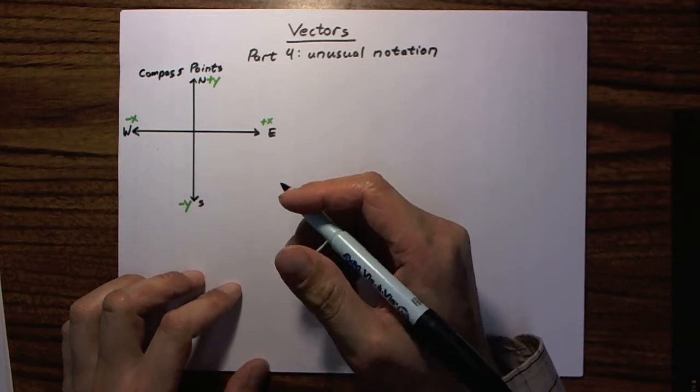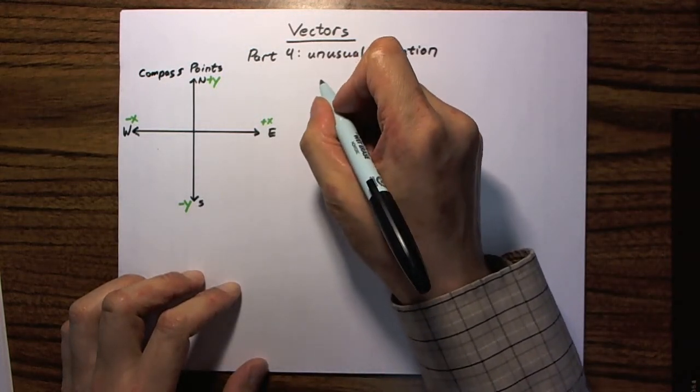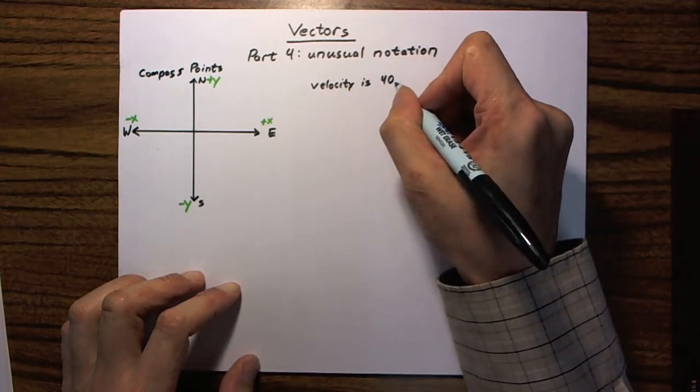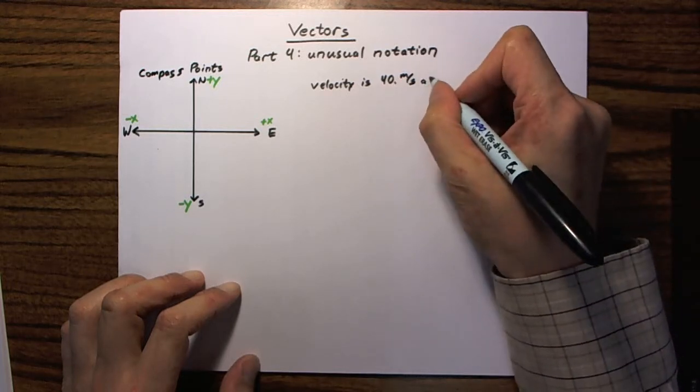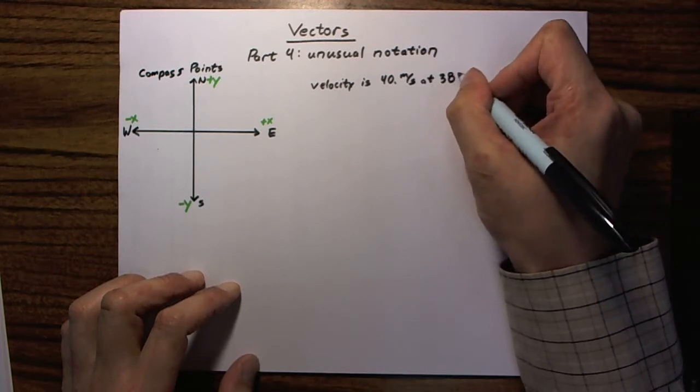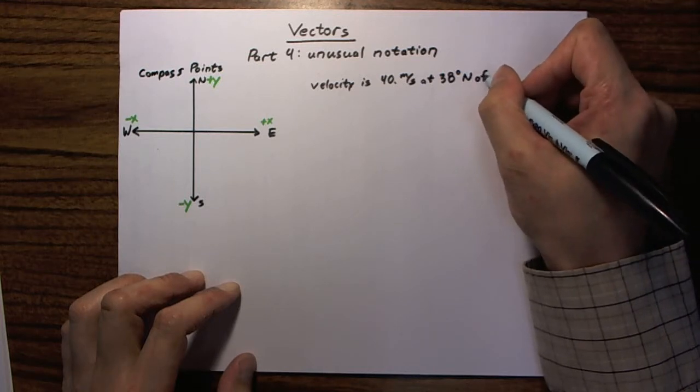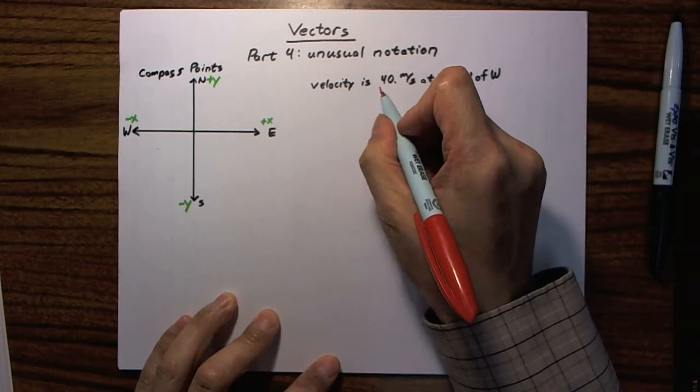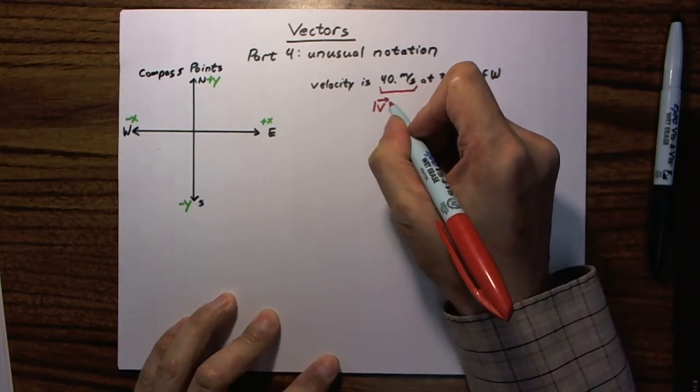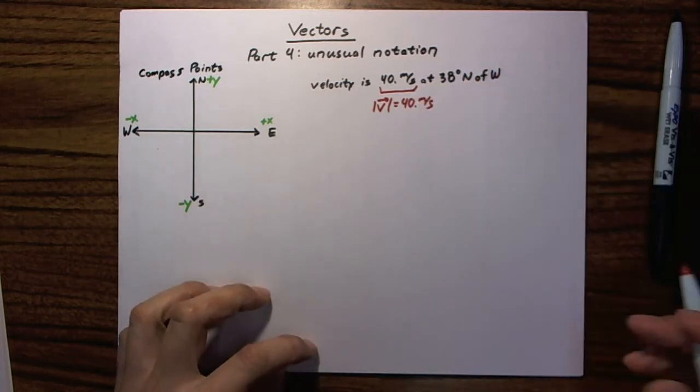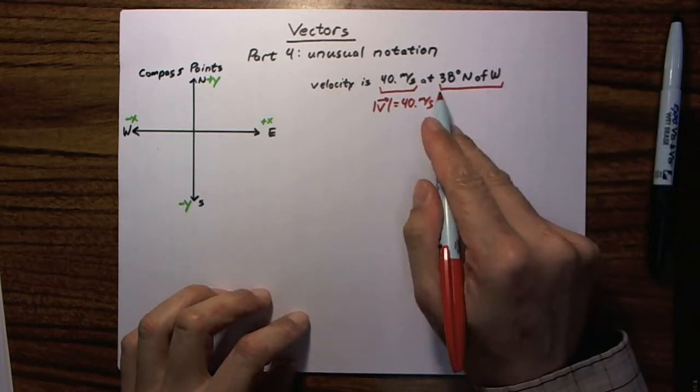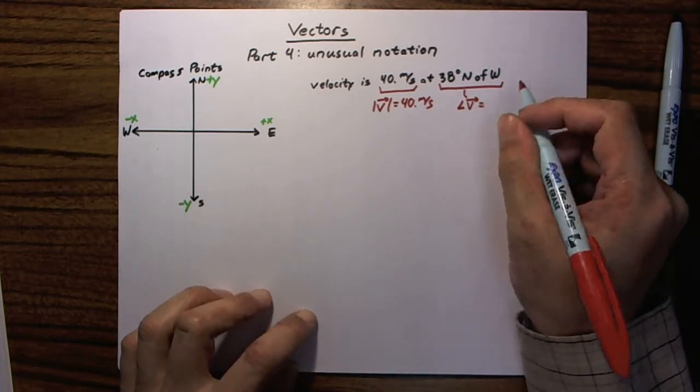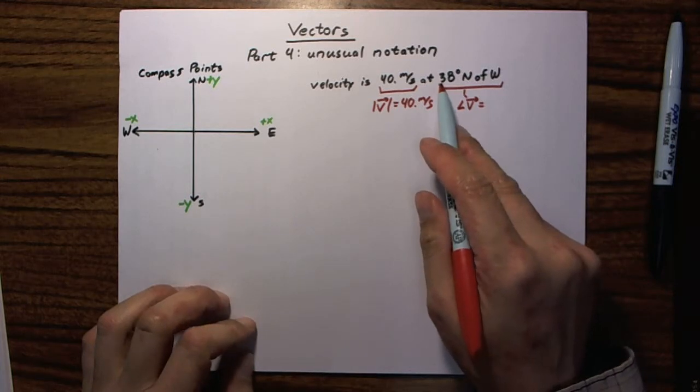It's very common, or it's reasonably common in some textbooks to write something like this. If you have velocity is 40 meters per second at 38 degrees north of west. Okay, so obviously we're dealing with a velocity vector, and the 40 meters per second means that the magnitude of velocity is 40 meters per second. No big stretch of the imagination there. This second bit of information tells you the direction of velocity, but as I said before, to a beginner who's never seen this before, it can be a little confusing.